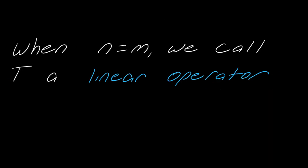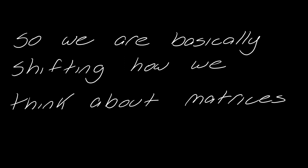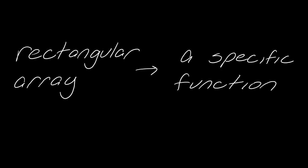Now, in the event that N equals M, so it just goes from Rn to Rn, then we say that T is a linear operator. So we have a linear transformation. A linear operator is just a specific case of a linear transformation. So basically we're just shifting how we think about matrices with this terminology. So we go from having this idea of a rectangular array to now we're thinking about these as specific functions.